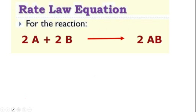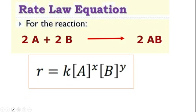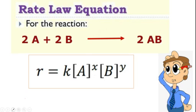Let's consider this hypothetical reaction where A and B are the reactants: 2 moles of A is reacting with 2 moles of B to give 2 moles of the product AB. Here we are concerned only about the reactant amount, not the product. The rate law equation for this is R = K times [A] to the power X, [B] to the power Y. Here, R is the rate, K is the rate constant, and A and B are the initial concentrations of the reactants taken at the start of the experiment. X and Y are experimentally determined — they might equal the stoichiometric number or might not. They can be 0, 1, 2, or even a fraction like one-half.